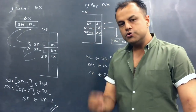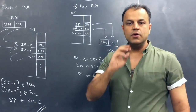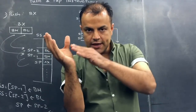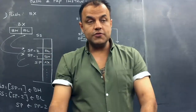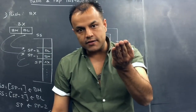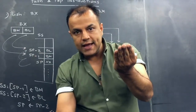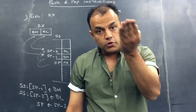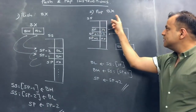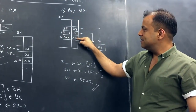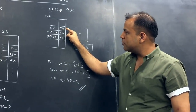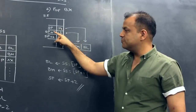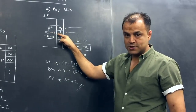If you understood PUSH, you should understand POP right away — it's just the opposite. PUSH BX pushes the value of BX into the stack. POP BX pops data from the top of stack into BX. So I have written POP BX. Here is the stack segment with values 1, 2 at the top and 3, 4 below. The top of stack is pointed by SP, which stands for stack pointer.